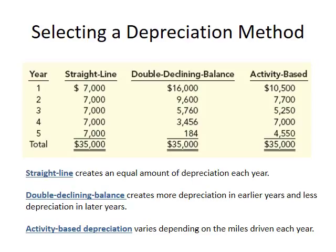Comparing the three methods: under straight-line, we depreciate $7,000 each year uniformly. Under double declining balance, we depreciate more in earlier years and less in later years — the depreciation expense decreases over time. Under the activity-based method, depreciation fluctuates based on usage. Overall, regardless of method, total depreciation always equals $35,000. The only difference is how we allocate that $35,000 across the years.